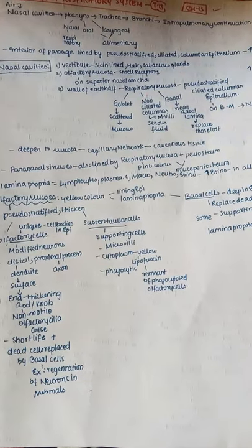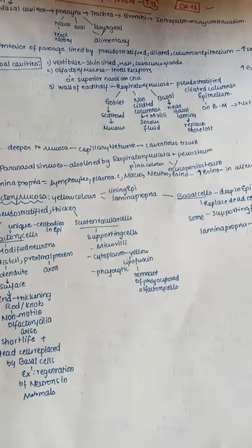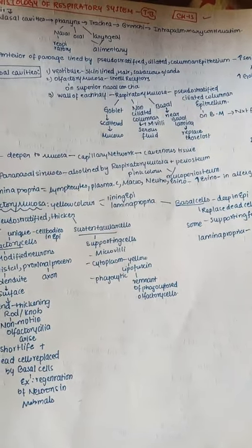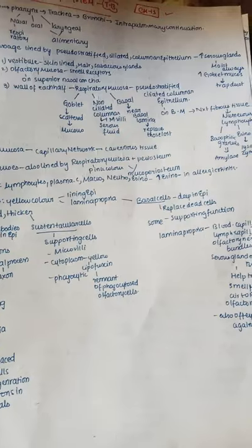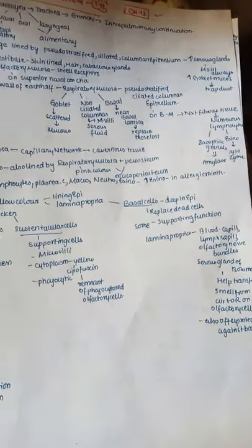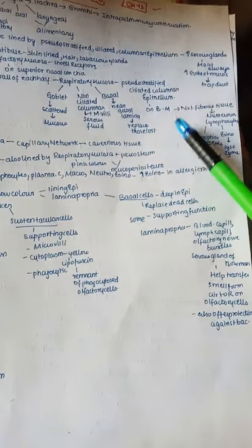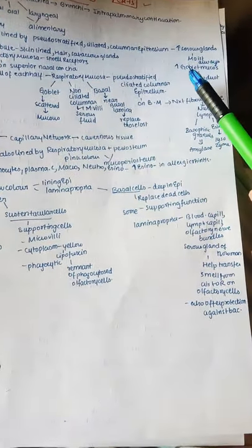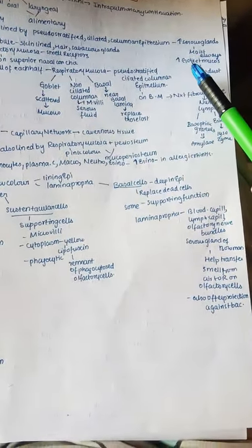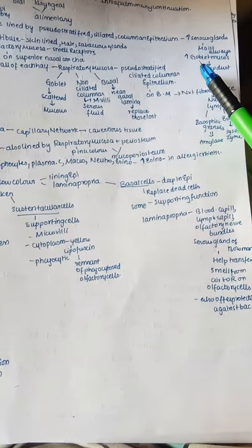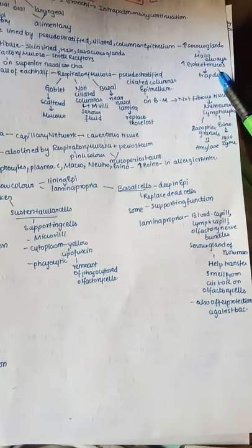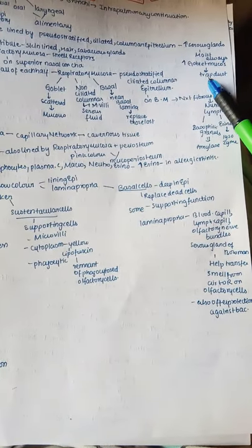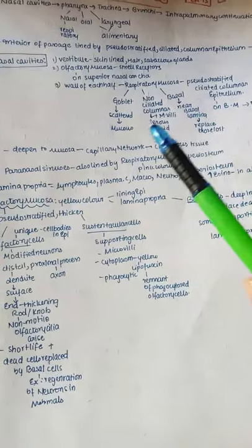The interior of the passage is lined by a pseudo-stratified ciliated columnar epithelium, having more serous glands and also more goblet cells which secrete mucus and help in trapping dust molecules.